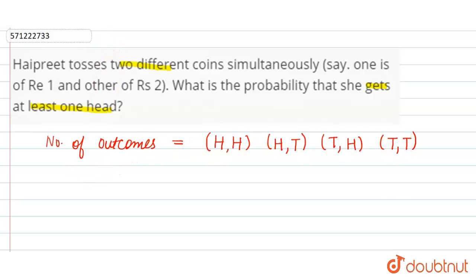Now in the question it is asking to find the probability that she gets at least one head. At least one head means one head should be minimum, out of two coins.